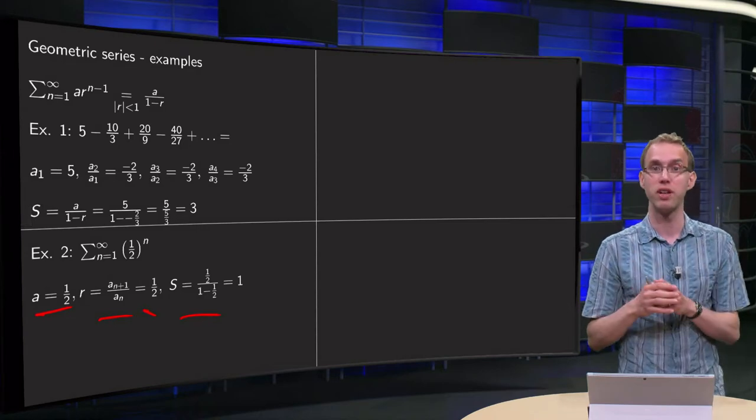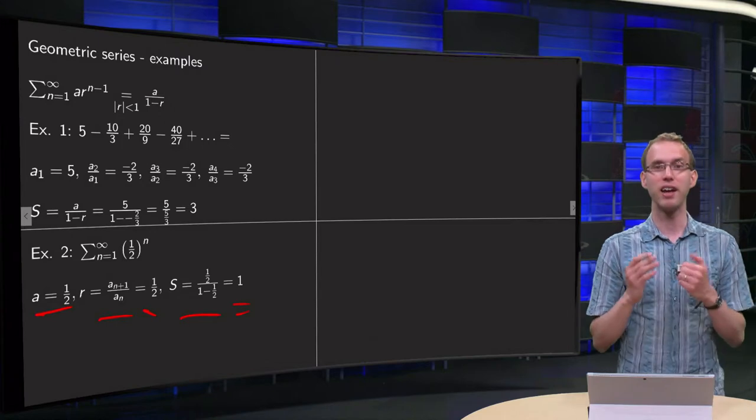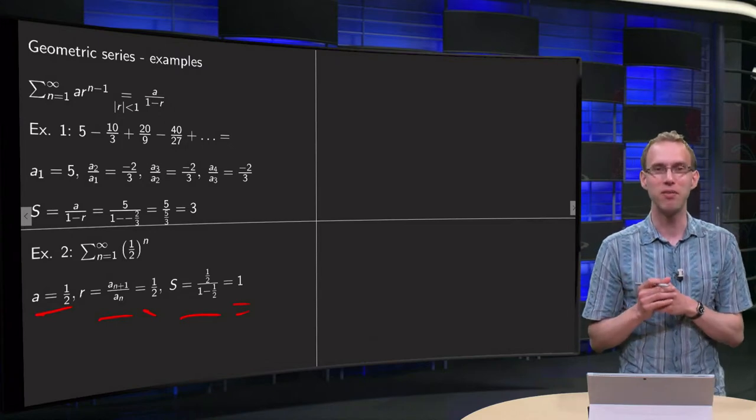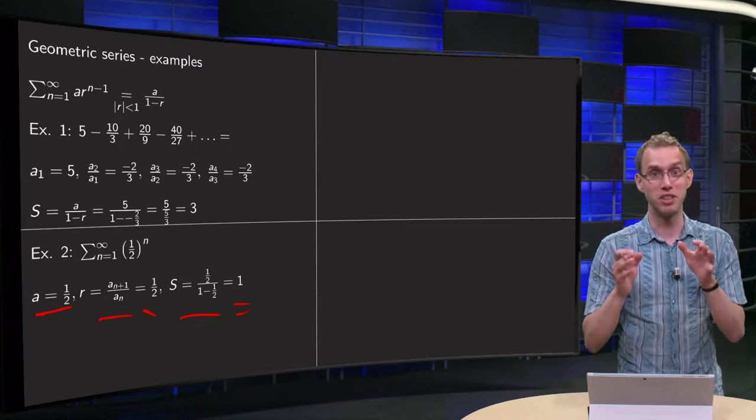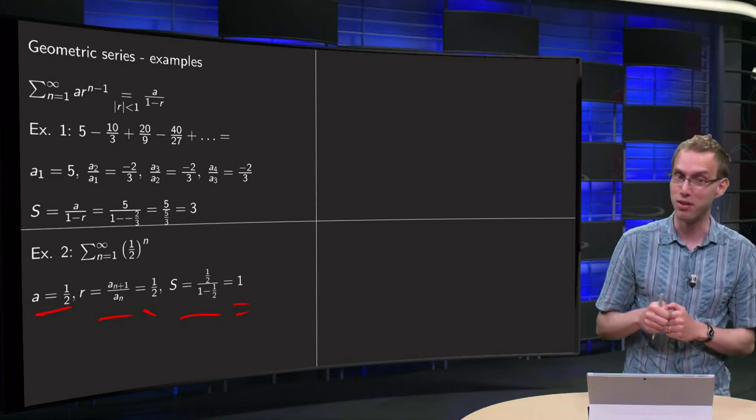equals 1 half over 1 half, equals 1, again 1. I guess we are now really convinced that this sum is really 1. We solved it in 3 different ways.